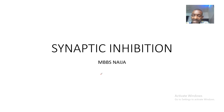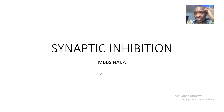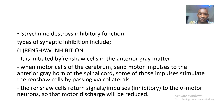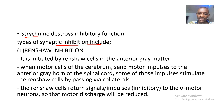Today we'll be talking about synaptic inhibitions. You already know what a synapse is — that's a junction, a gap between two nerves or a nerve and an effector organ which could be muscle or gland. We'll be talking about the synaptic inhibitions, and first of all you should know that if you have a synaptic inhibition and you want to stop it, you could use strychnine, which destroys synaptic inhibitory function.